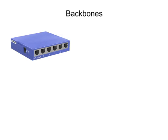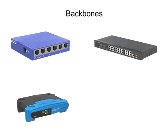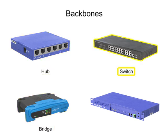Signal flow and data transfer are assisted within a network by various devices known as backbones. The four different backbone devices are hubs, bridges, switches, and gateways. Each device transports data in a specific way.